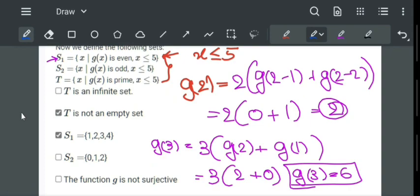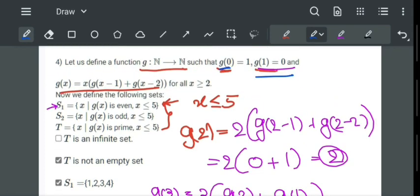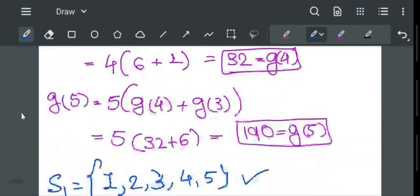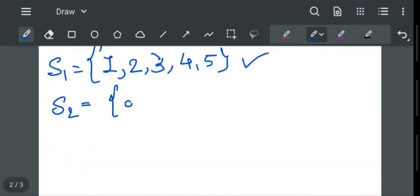Now find s2, x where g of x is odd. For x equal to 0, we get g value is equal to 1, and it will be a singleton set, s2 equal to singleton set 0.